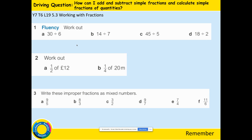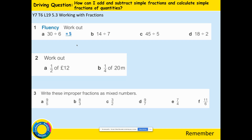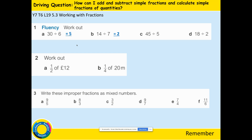Question 1: 30 divided by 6 is 5. Remember to check with the inverse operation — 5 times 6 is 30. 14 divided by 7 is 2. 2 times 7 is 14.